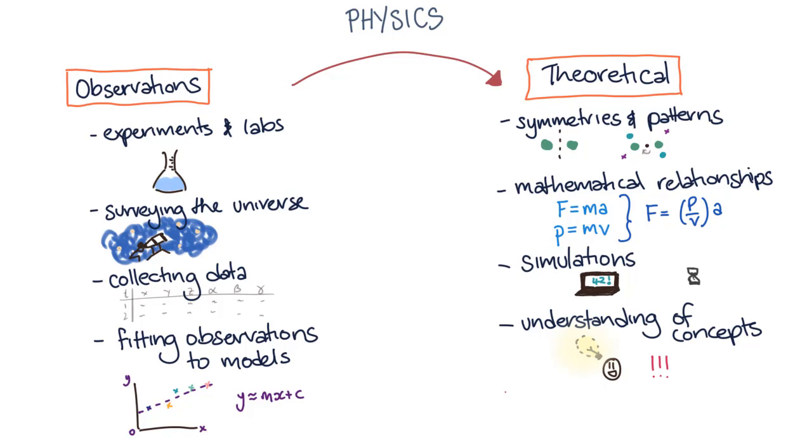But to test our understanding of theoretical physics, we need to do observation physics, doing experiments in labs to test that the equations and relationships are giving us the answers that we expect. So if you go on to be a researcher or scientist, these observations and theories are how you would actually do physics.